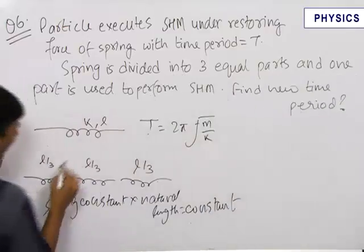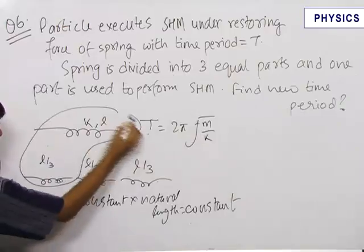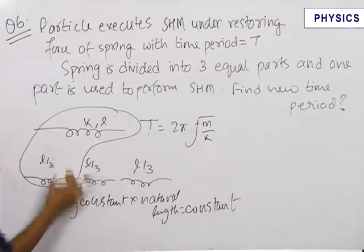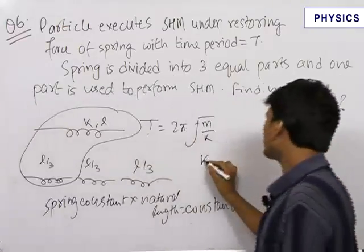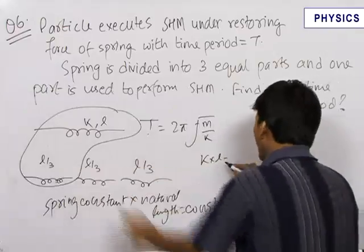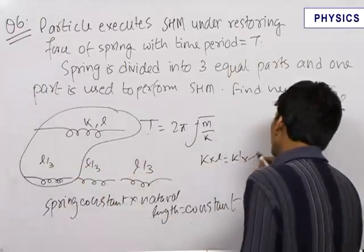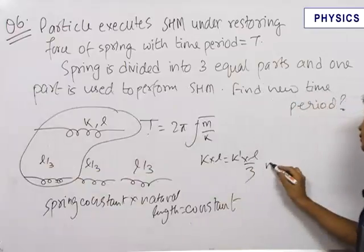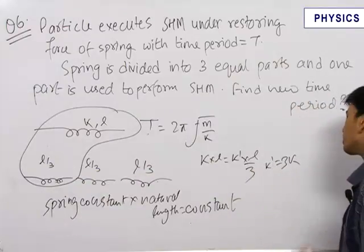Therefore, let us apply this formula for these two springs as both have the same material. k × l = k' × (l/3), where k' is the new spring constant. Therefore, we get k' = 3k.